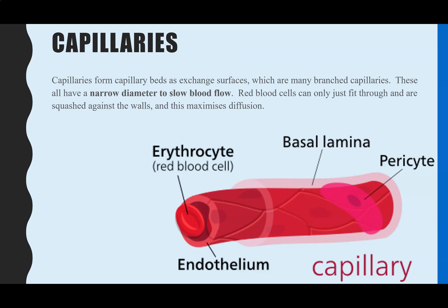Next, capillaries. A capillary is one cell thick, as you can see here — it's only made up of one cell. Red blood cells can only just fit through the diameter of the lumen, and that is an advantage because it means blood flow slows down significantly in the capillaries. We want the blood to flow slower so there's more time for diffusion. Capillaries are found in the villi, the alveoli, and the nephron — all places where diffusion occurs.